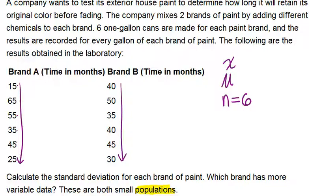Let's calculate the average mean mu for Brand A and Brand B. To calculate the mean, we take the sum of all our different data values and divide by six. Add up 15, 65, 55 and so on, and you get 240. Then divide by six and you get that our mean is 40.